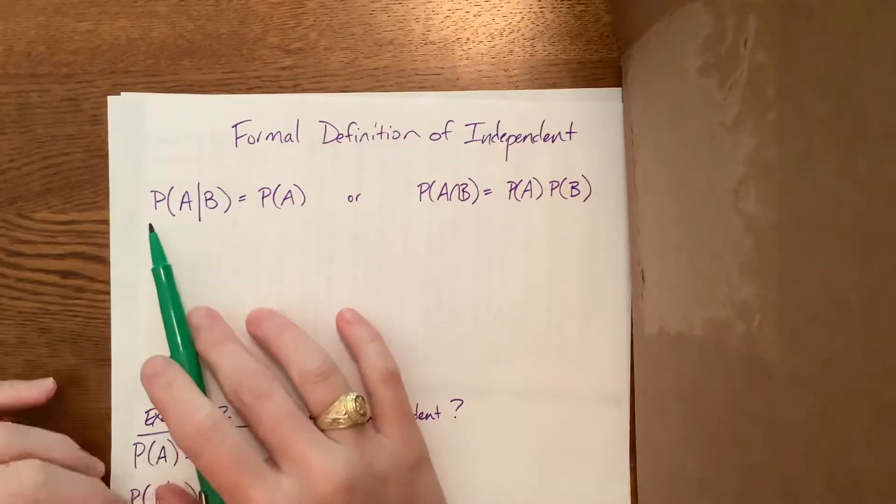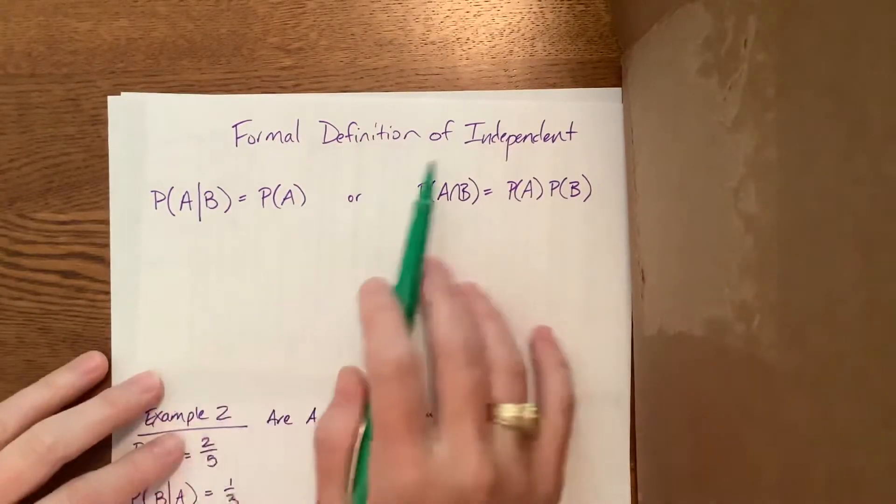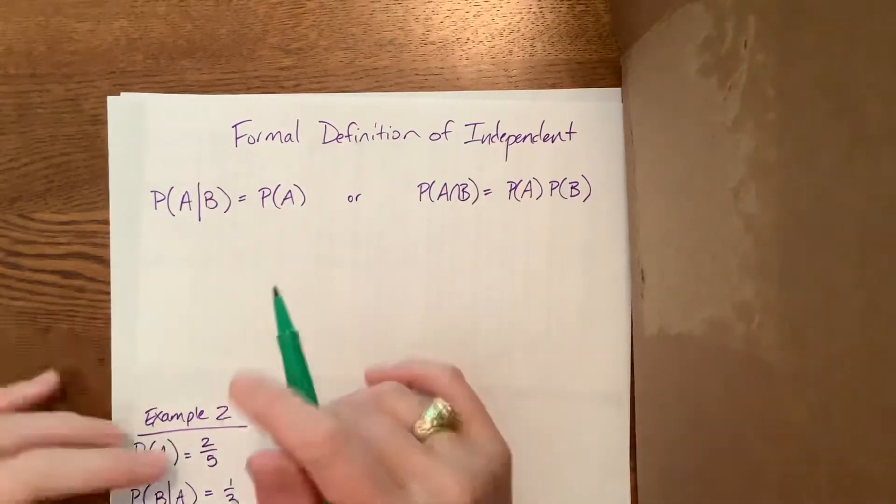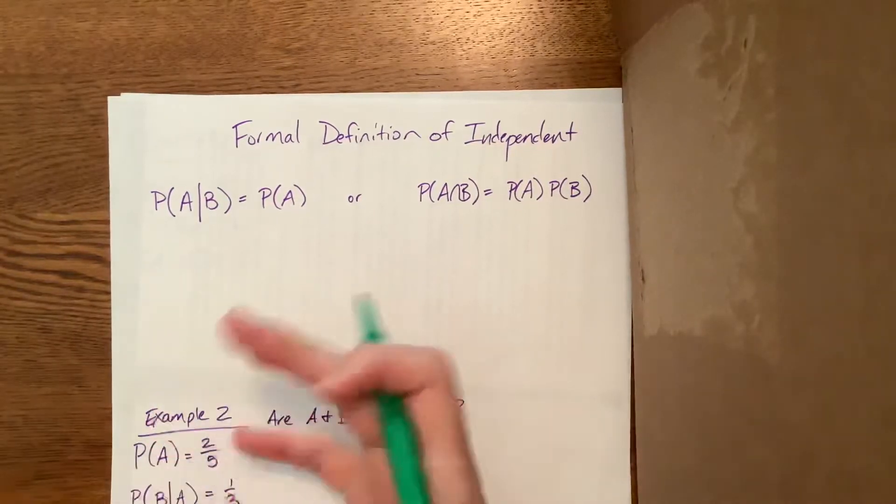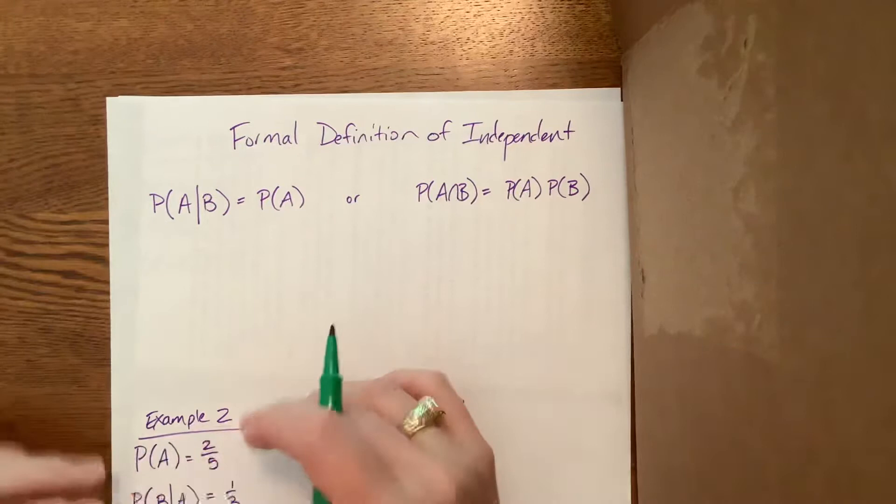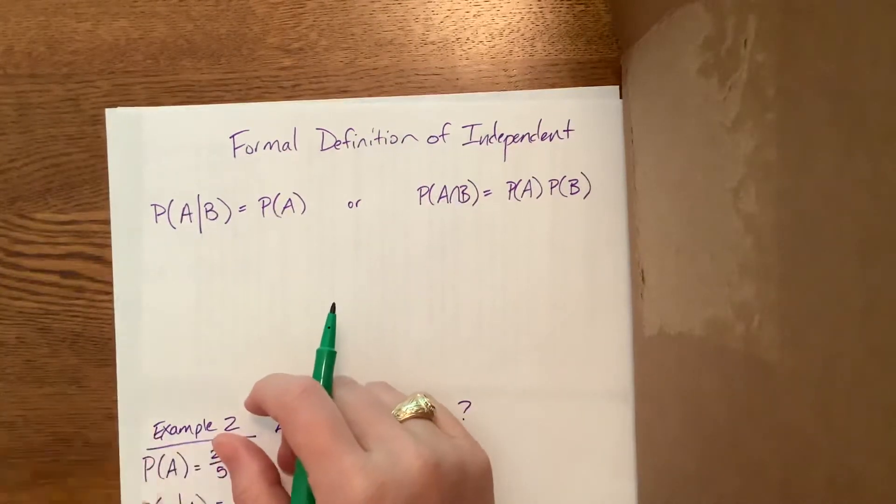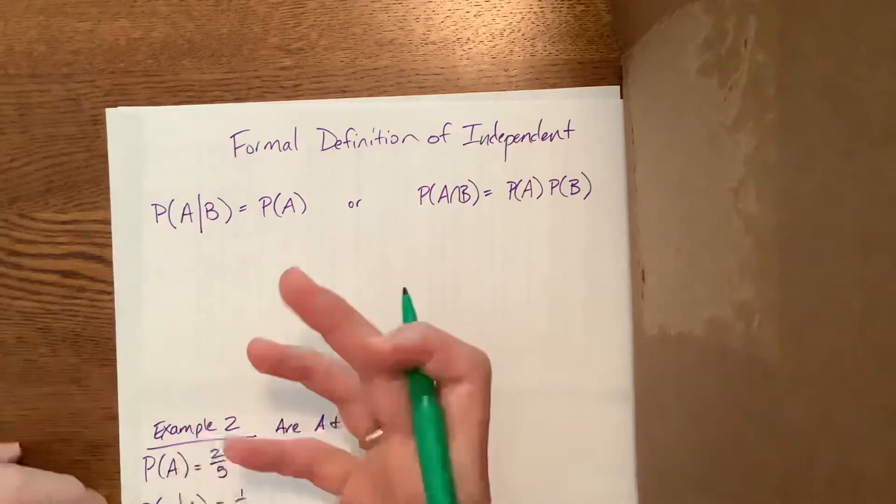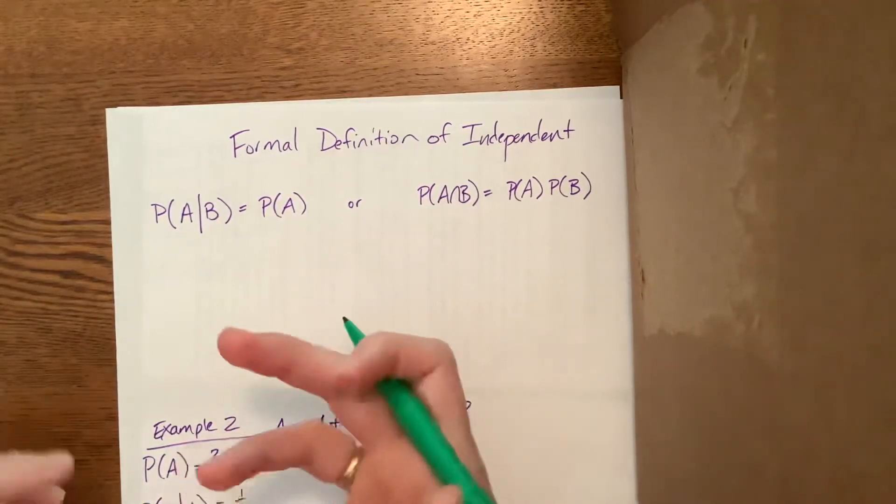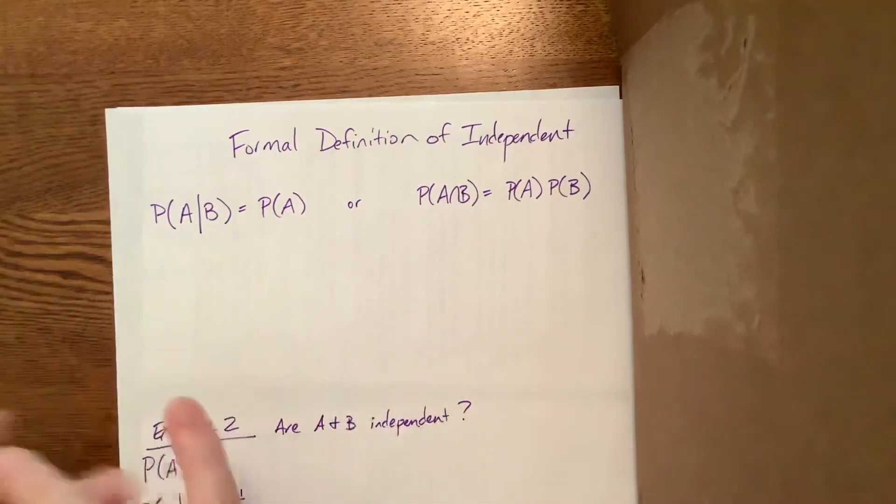As we get started, what it means for two independent events is for one to have no impact on the other. The best example is flipping a coin and rolling a die. What you get on the coin has nothing to do with what happens when you roll the dice, so those events are completely independent.